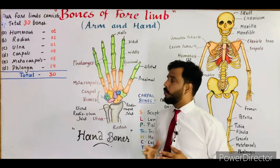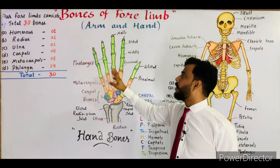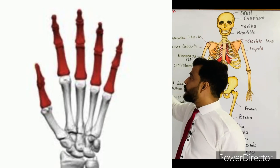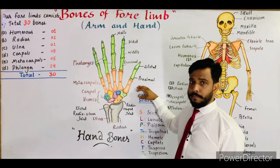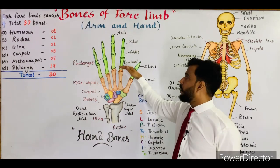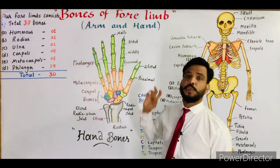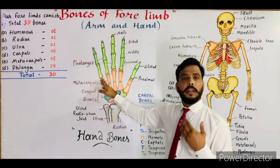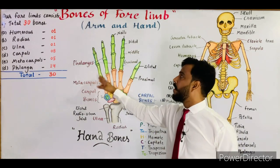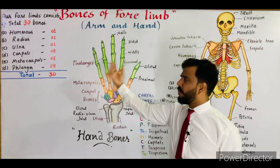The phalanges are 14 in number. The thumb consists of two phalanges: the lower is known as proximal and the upper as distal. The index finger consists of three phalanges: the lowermost is proximal, the next is middle, and the last is distal. At the end of the distal bone, each finger has a nail. Similarly, the middle finger, ring finger, and little finger each consist of three phalanges — proximal, middle, and distal. So each finger has three phalanges while the thumb has two.